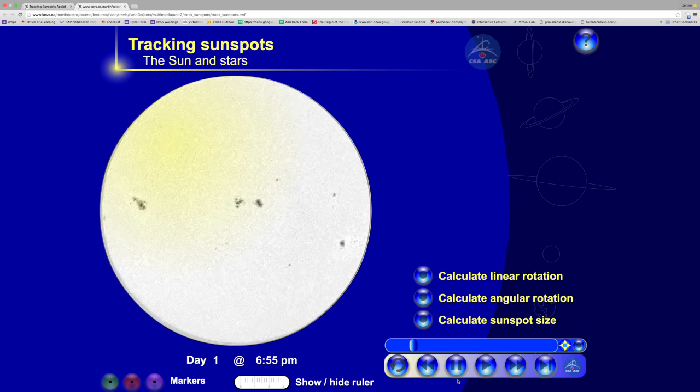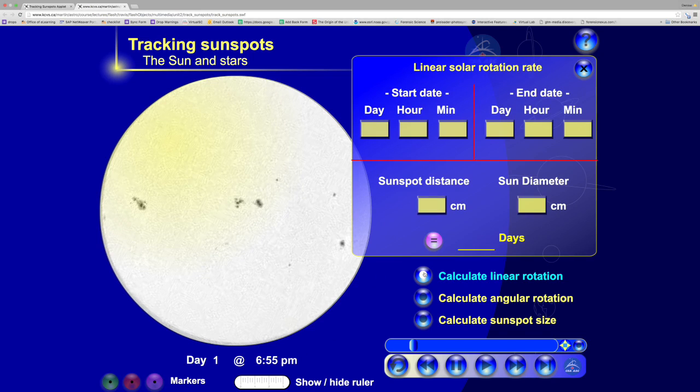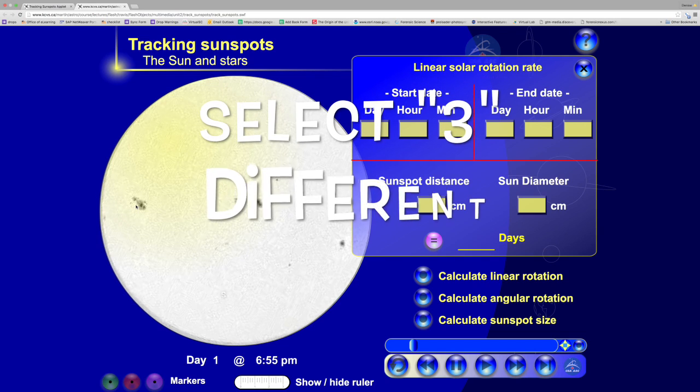As you notice here at the bottom, you have Day 1 at 6:55 p.m. You can actually open up this calculation and type that in: Day 1, 6:55. We're going to pick three different sunspots on three different locations on the Sun.